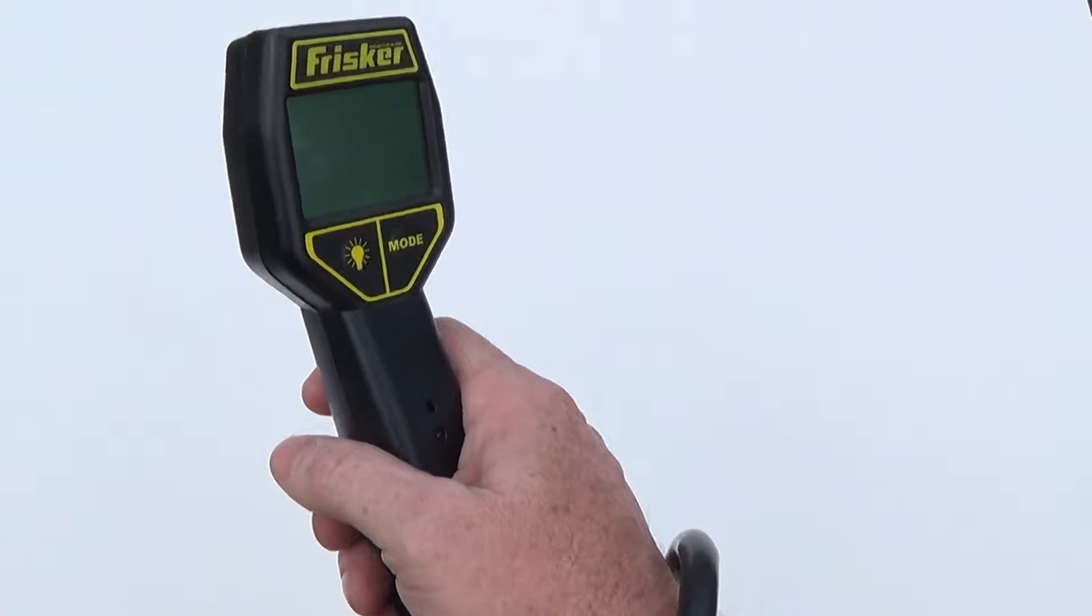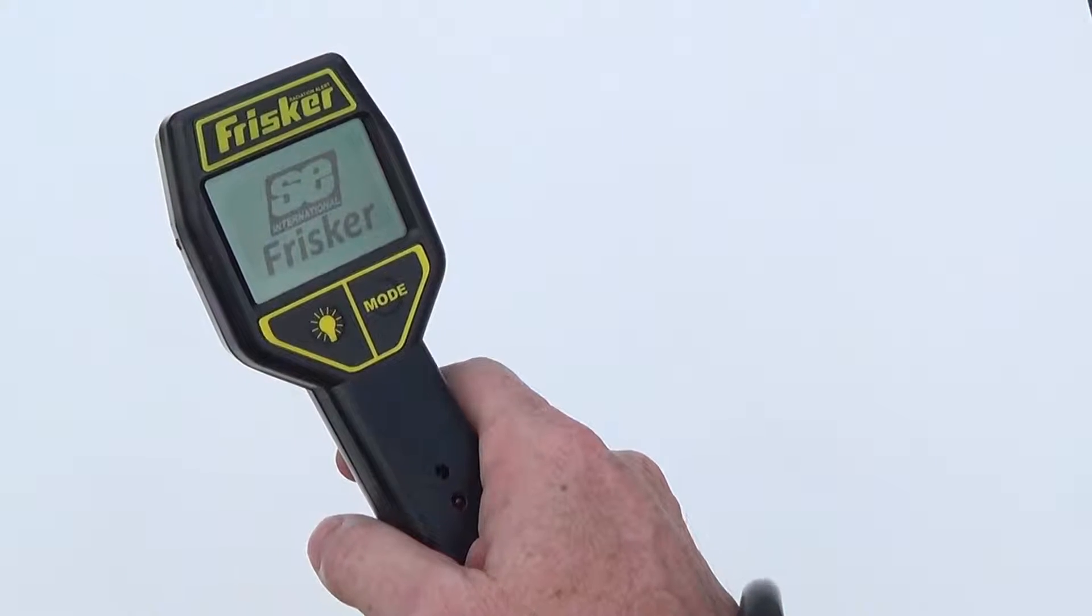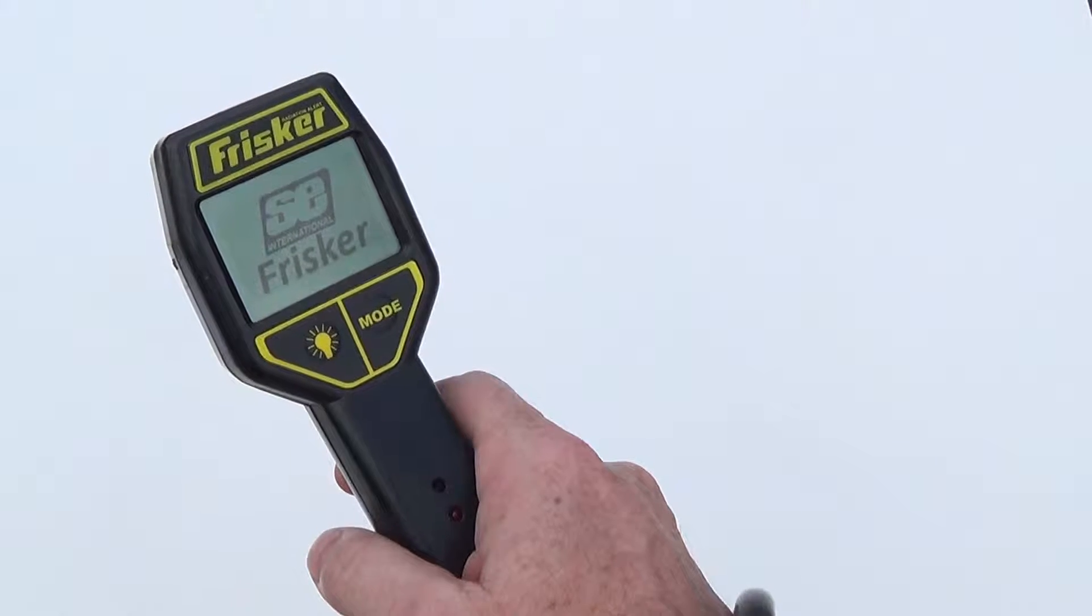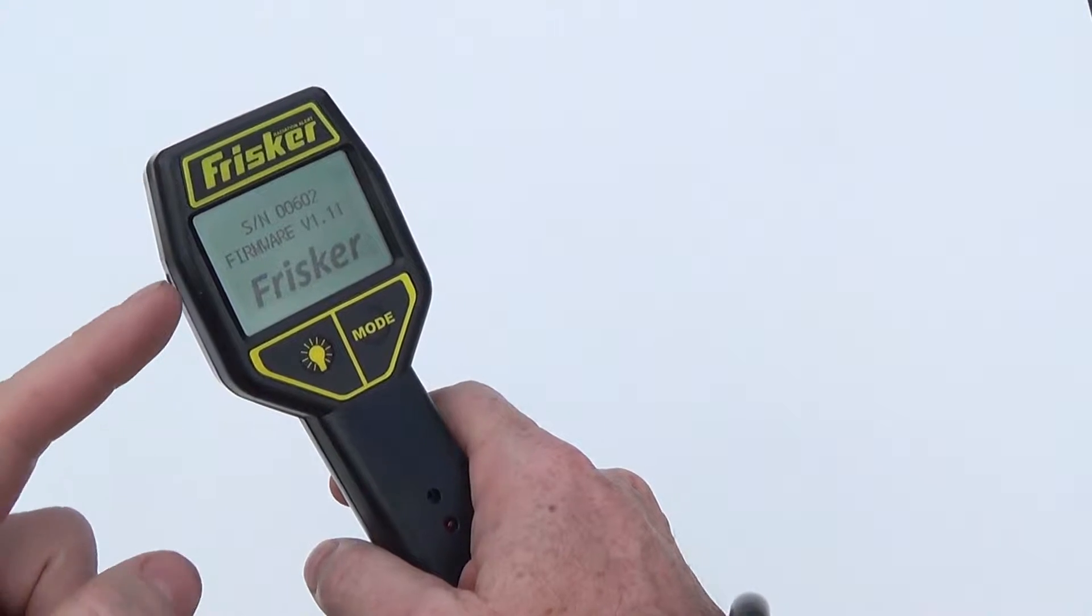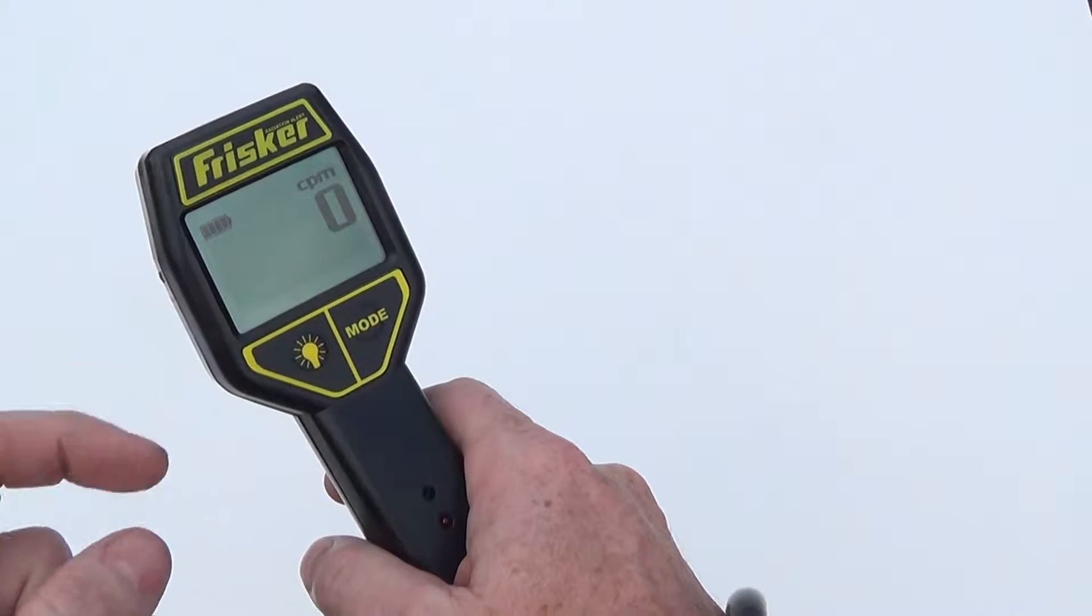Once the unit is powered on, the Frisker will beep and begins a 6 second system check. It will display the serial number of the unit and the firmware unit, here on the display.